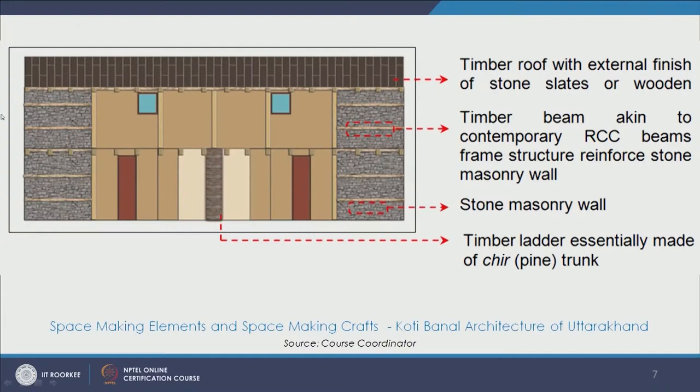A similar example is found in Uttarakhand, called Koti Banal architecture. This is an elevation drawing — it is a house in a village called Malhari in the Chamoli district. Here also we see alternate bands: there is stone masonry and then there is a timber beam, which is very akin to the contemporary RCC beam frame structure that reinforces the stone masonry wall. This is taken from indigenous communities and traditional know-how, and we still find these examples in Uttarakhand which have stood the test of time — houses that are 300 years old, 500 years old, and in some cases beyond that.